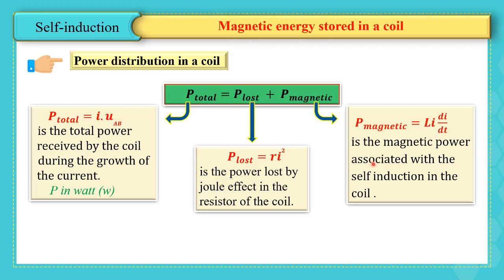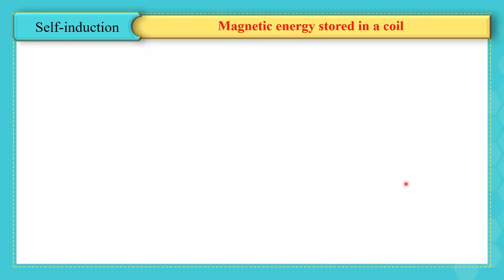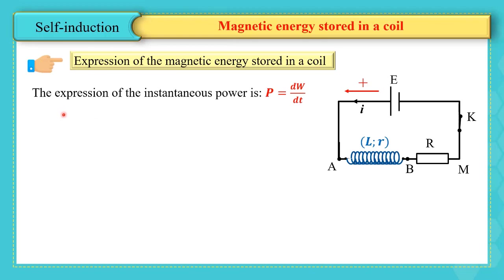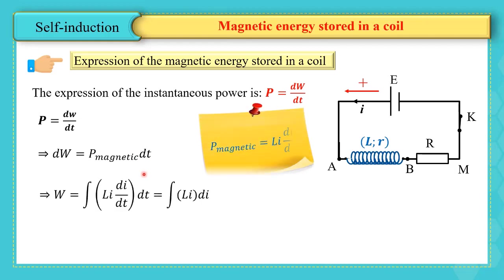The instantaneous power is P = dW/dt, so dW = P dt. Integrating both sides with respect to time, we obtain W = ∫Li(di/dt) dt, which is P_magnetic × dt. Cancelling dt, we get W = ∫Li di.